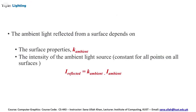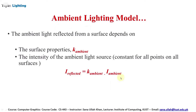The ambient light reflected from a surface depends on the surface properties, denoted by the intensity of the ambient light source, which is constant for all points on all surfaces. The equation is: I_reflected = K_ambient (surface properties) × I_ambient (source light intensity). By this multiplication we can get the I_reflected for the ambient model.